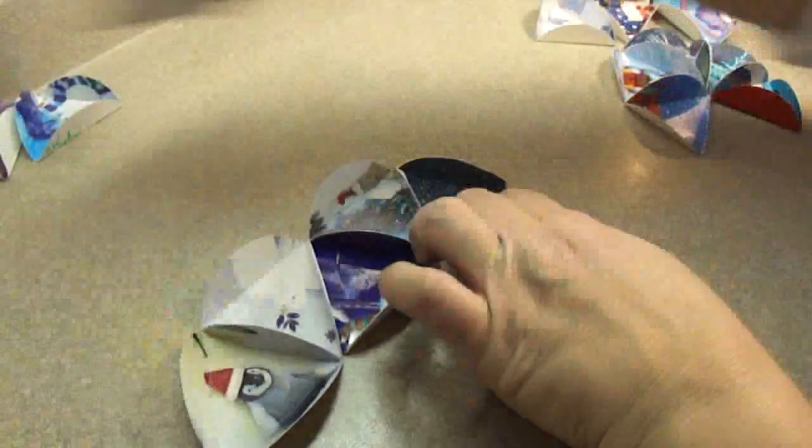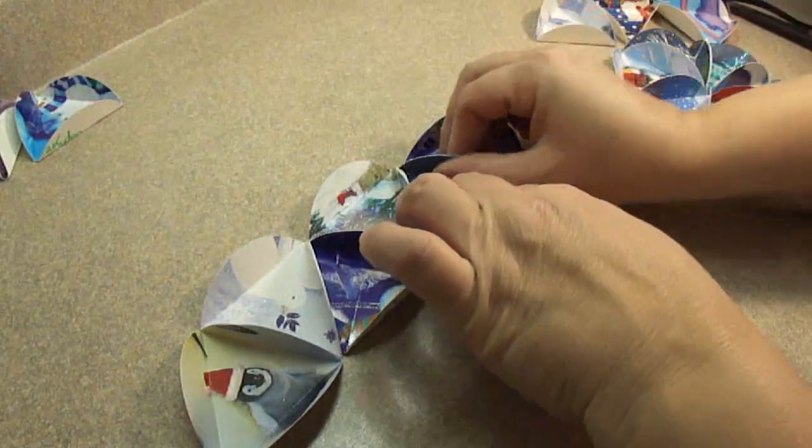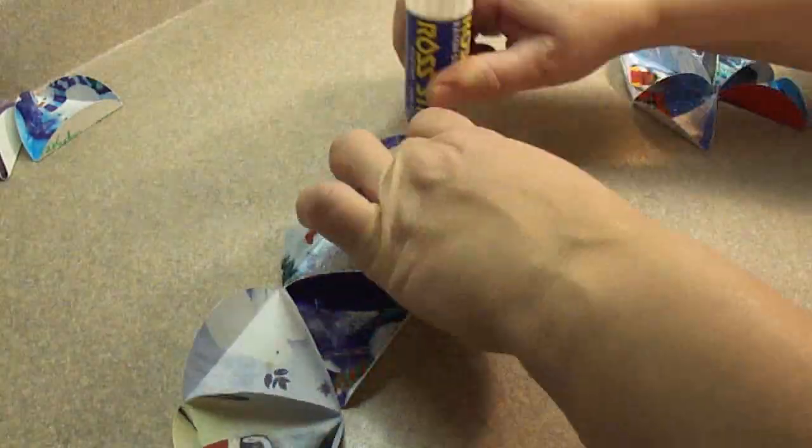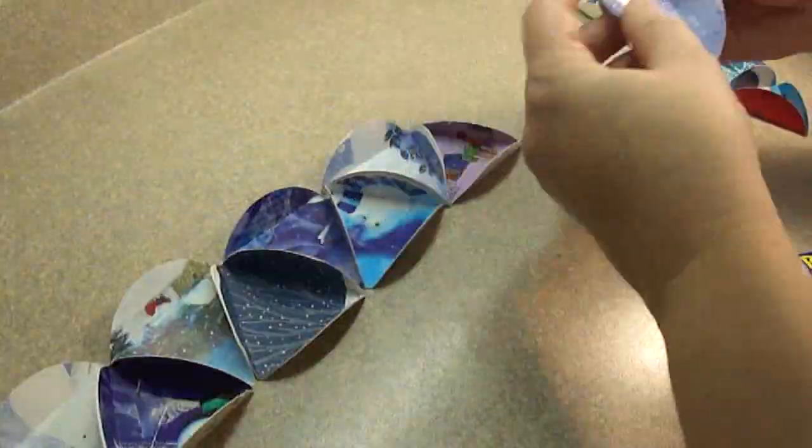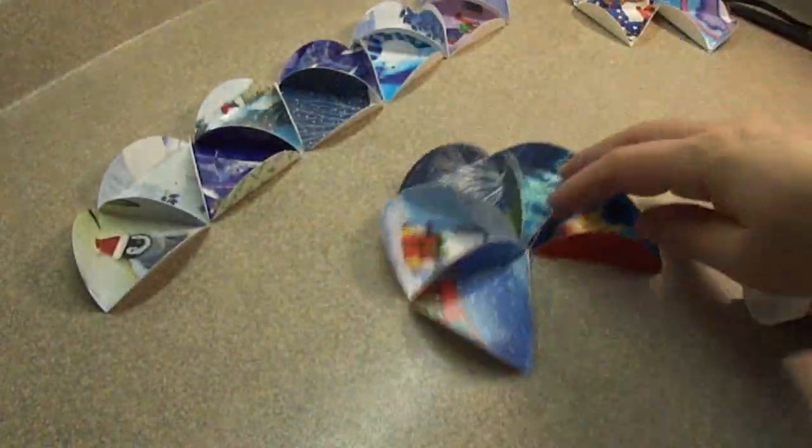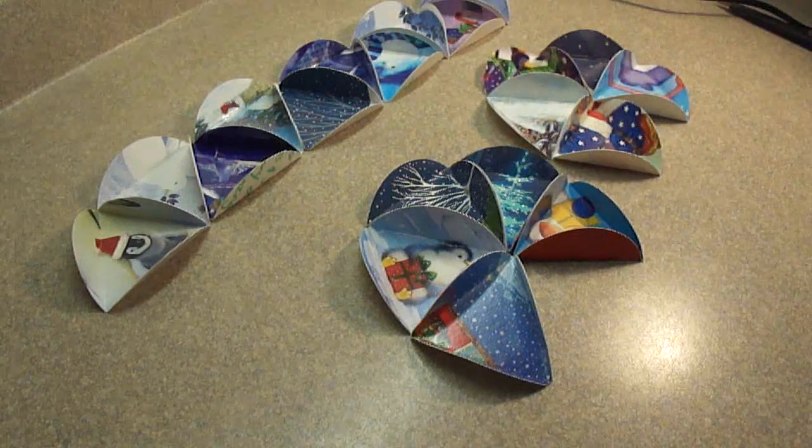And just continue gluing the pieces until you have all ten of them glued together. And it doesn't make much of a difference what kind of glue you use. I am just using stick glue. Any quick drying craft glue or clear drying craft glue would be perfect for this. So there are all the pieces you need for your ornament.